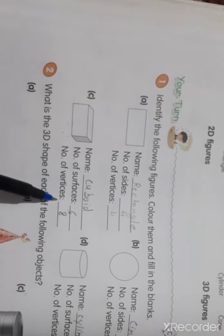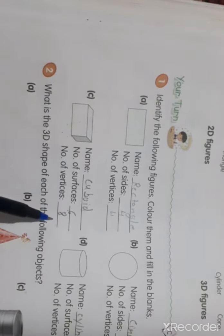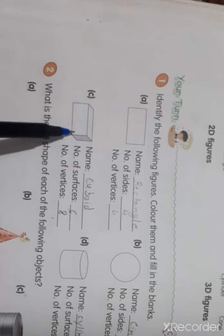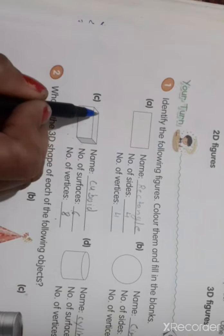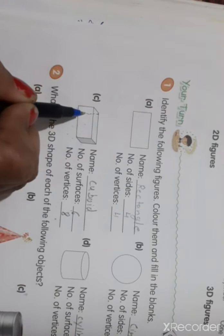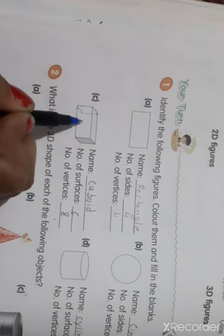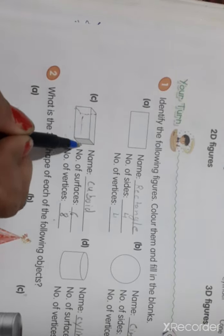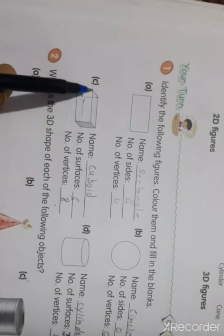And number of vertices, 8. Why? 1, 2, 3, 4, 5, 6, 7, 8. Here, 1, 2, 3, 4, and 1, 2, 3, 4, that's 6 surfaces.